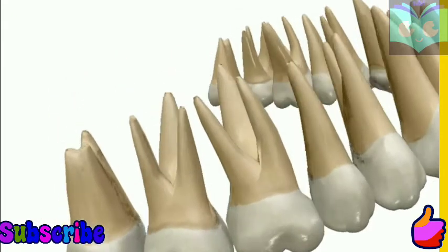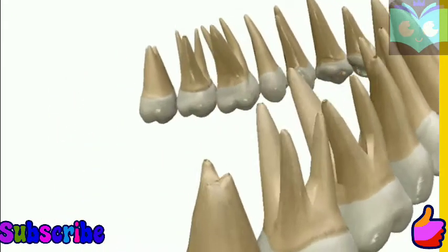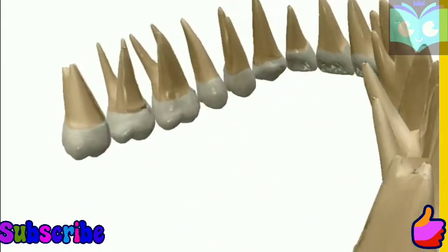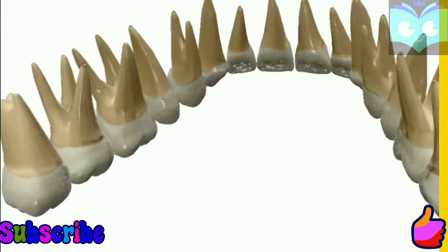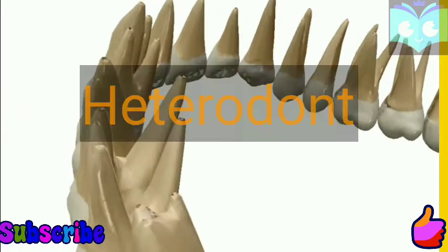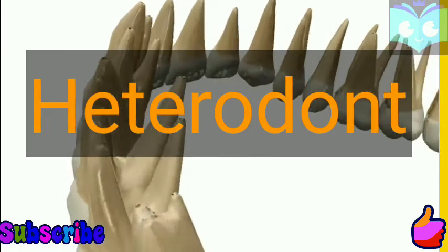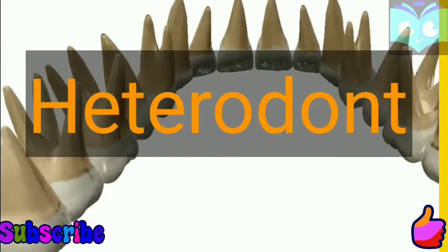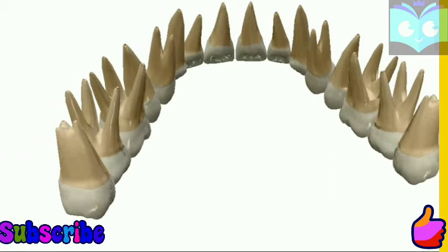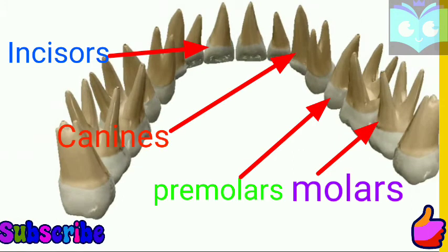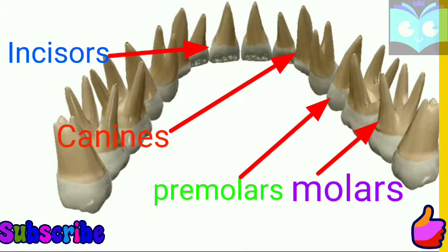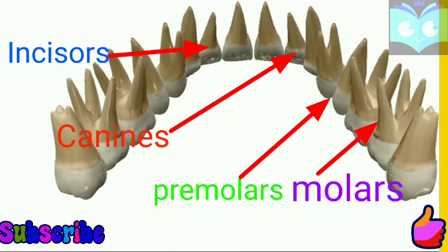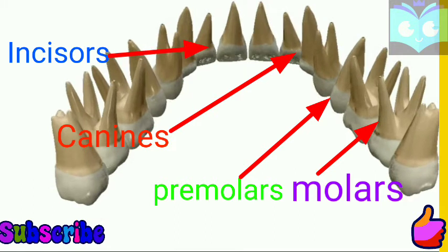The fourth type of teeth in humans is Heterodont, which means that different types of teeth are present to perform different functions — incisors for cutting, canines for tearing, and premolars and molars for grinding.